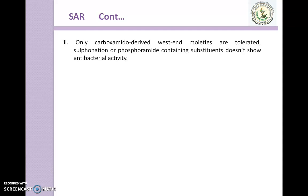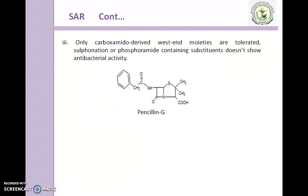Only carboxamido-derived side chain moieties are tolerated. Sulfonation or phosphoramide-containing substitutions do not show antibacterial activity. Here is the structure of Penicillin G, which has a carboxamido-derived moiety. If instead of this carboxamido-derivative you introduce a sulfonation or phosphoramide group, then your compound becomes totally inactive and does not show any antibacterial activity.